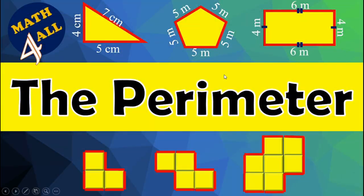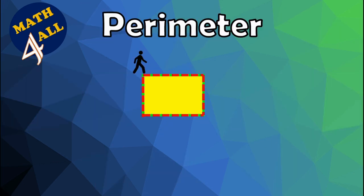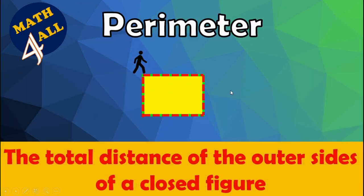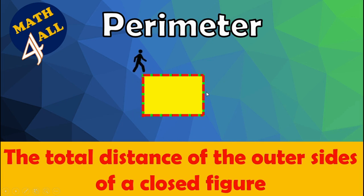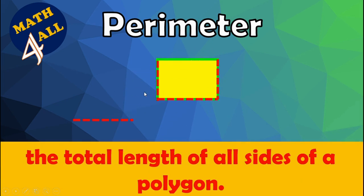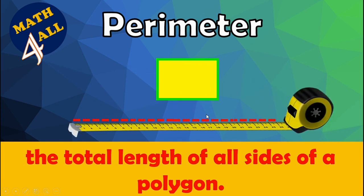The perimeter of regular and irregular polygons. The perimeter is the total distance of the outer sides of a closed figure. The length of these outer sides is called the perimeter. The perimeter means the total length of all sides of a polygon — if you add all these sides, you will get the perimeter.